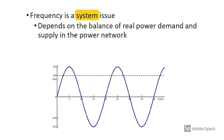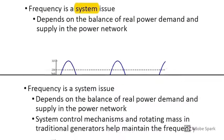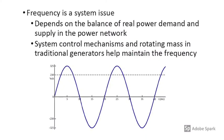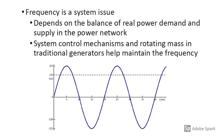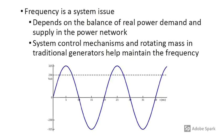Frequency depends on the balance of real power demand and supply in the whole network. Control mechanisms and rotating mass in traditional generators help maintain the frequency.